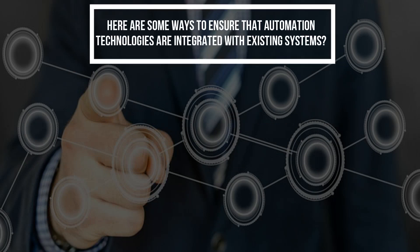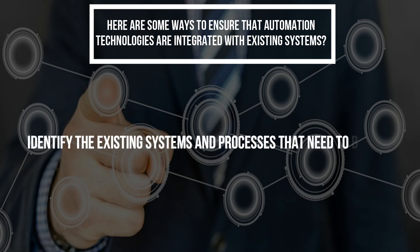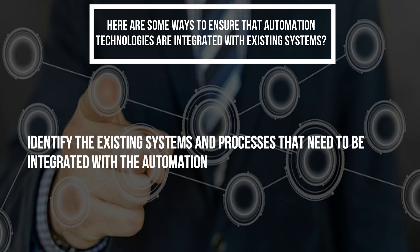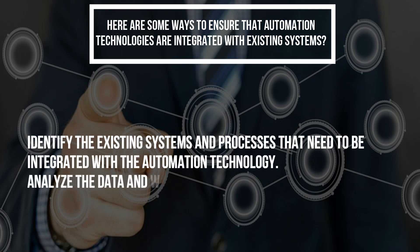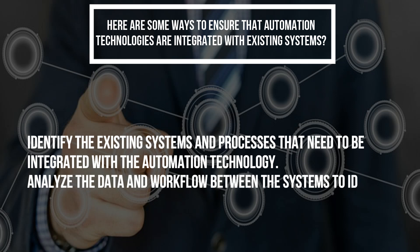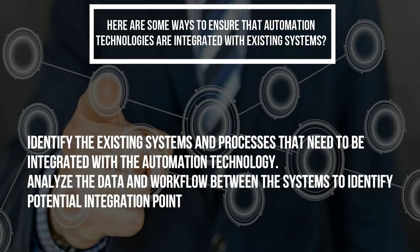Here are some ways to ensure that automation technologies are integrated with existing systems. Identify the existing systems and processes that need to be integrated with the automation technology. Analyze the data and workflow between the systems to identify potential integration points.